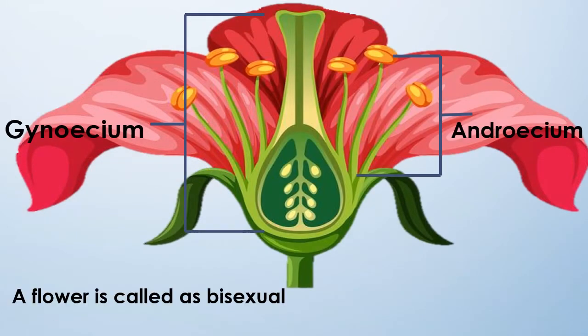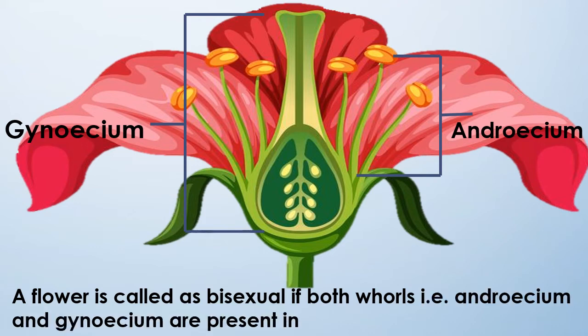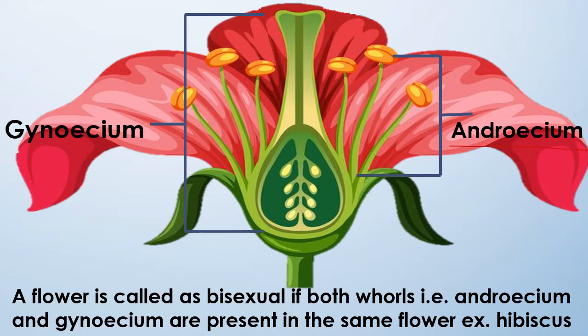A flower is called bisexual if both whorls — androecium and gynoecium — are present in the same flower. For example, hibiscus is a bisexual flower because both androecium and gynoecium are present in it.